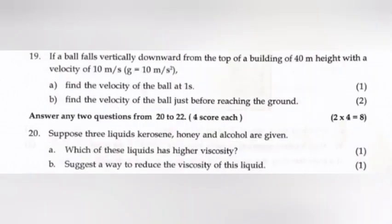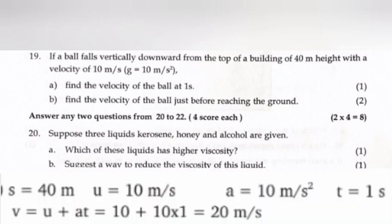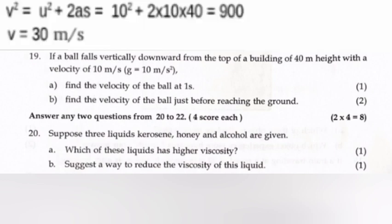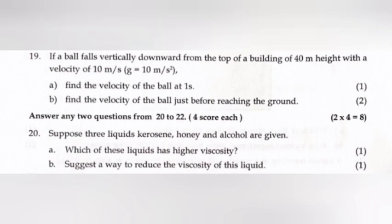Question 19: If a ball falls vertically downward from the top of a building of 40 meter height with a velocity of 10 m/s. (a) Find the velocity of the ball at 1 second. Answer: s = 40 m, u = 10 m/s, a = 10 m/s², t = 1 s. v = u + at = 10 + 10 × 1 = 20 m/s. (b) Find the velocity of the ball just before reaching the ground. Answer: v² = u² + 2as = 10² + 2 × 10 × 40 = 900. v = 30 m/s.